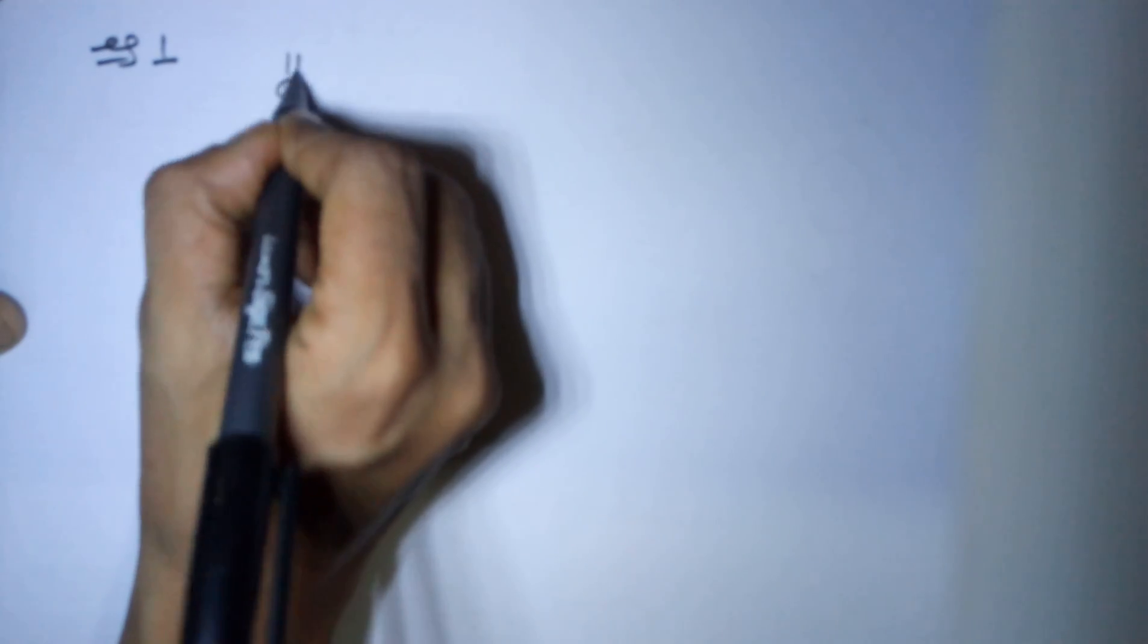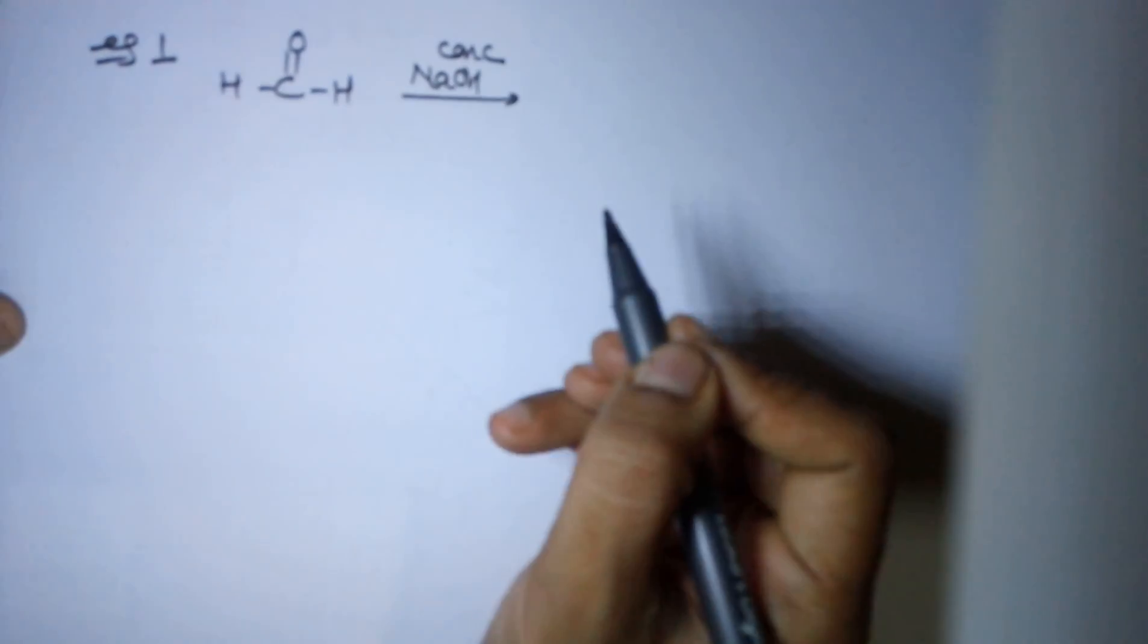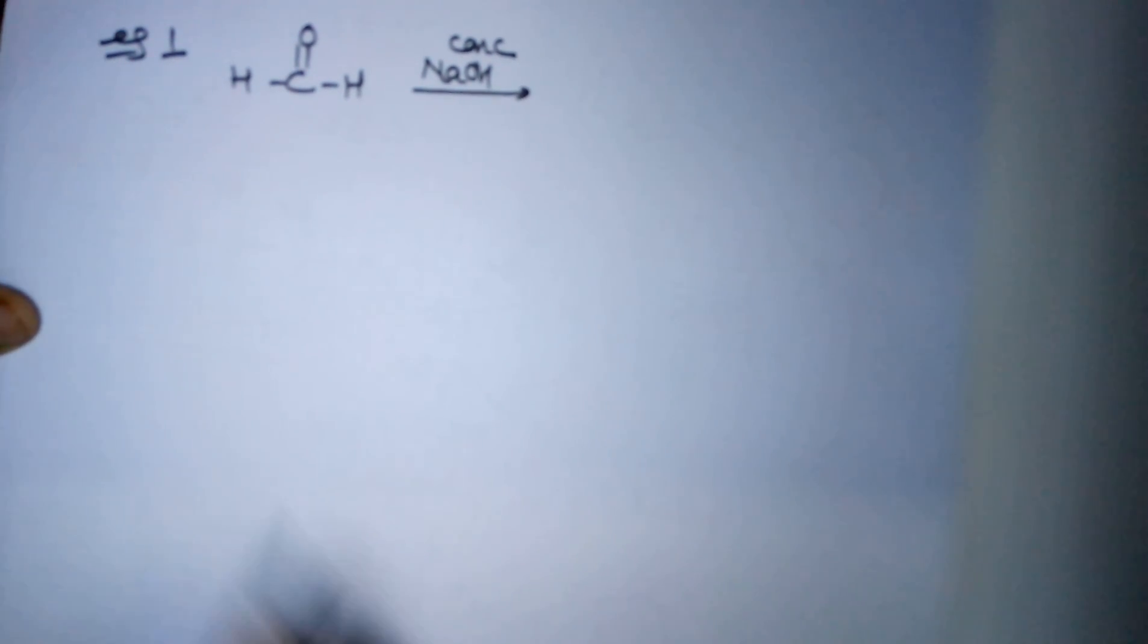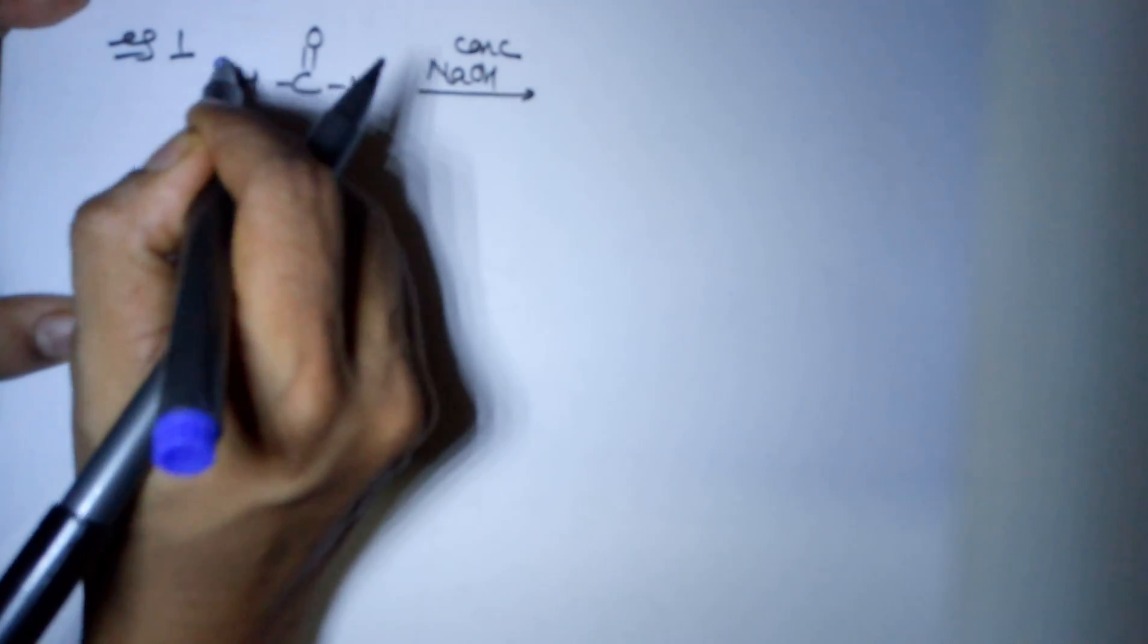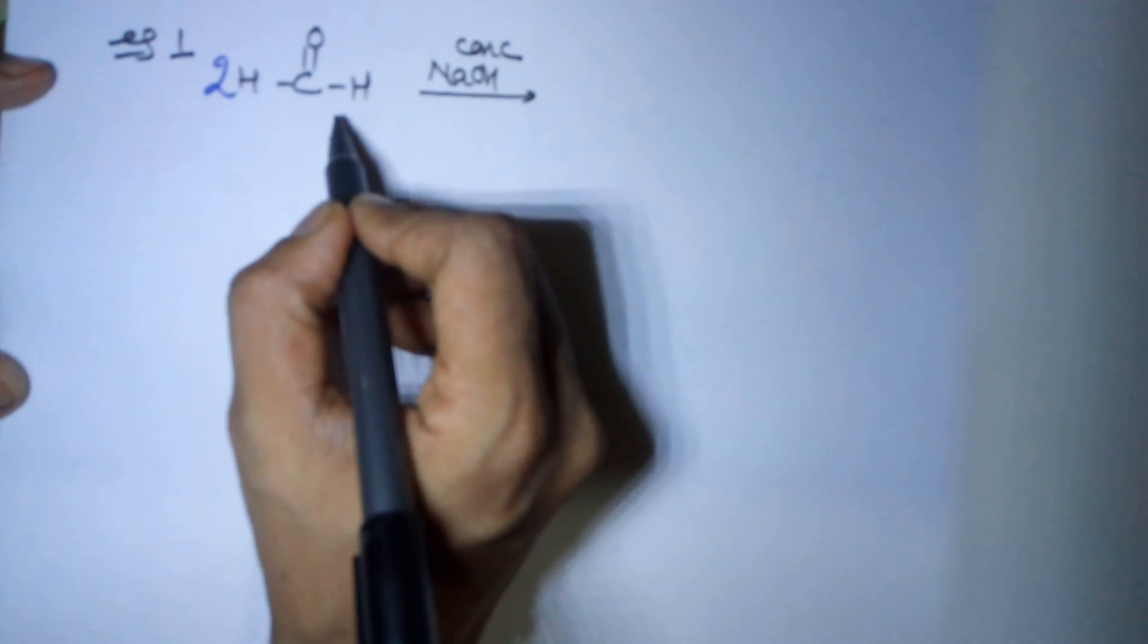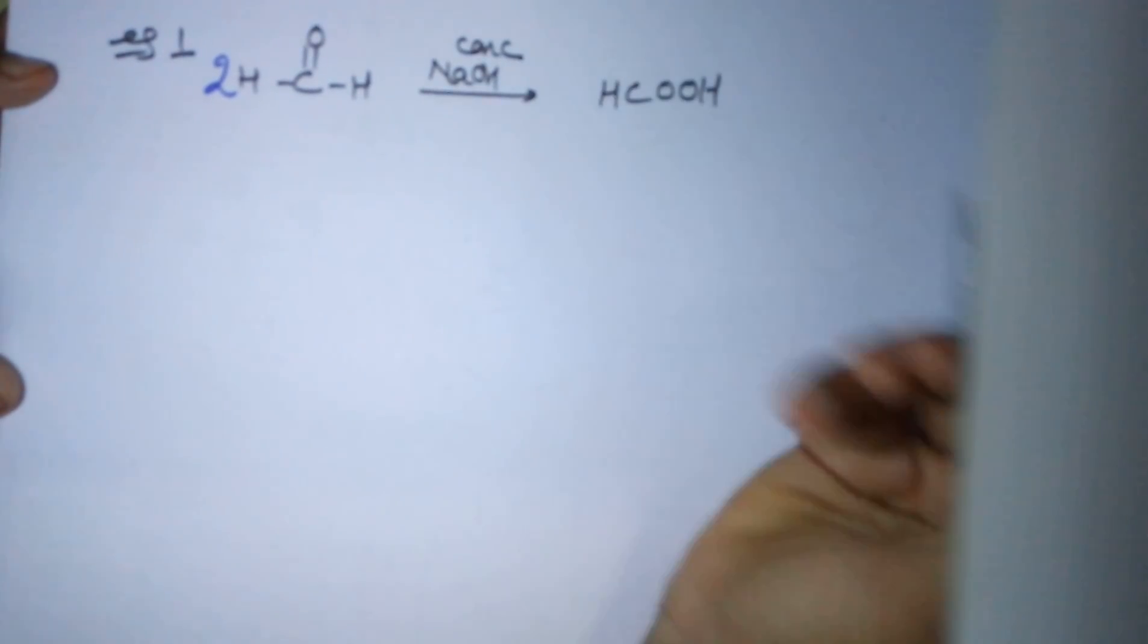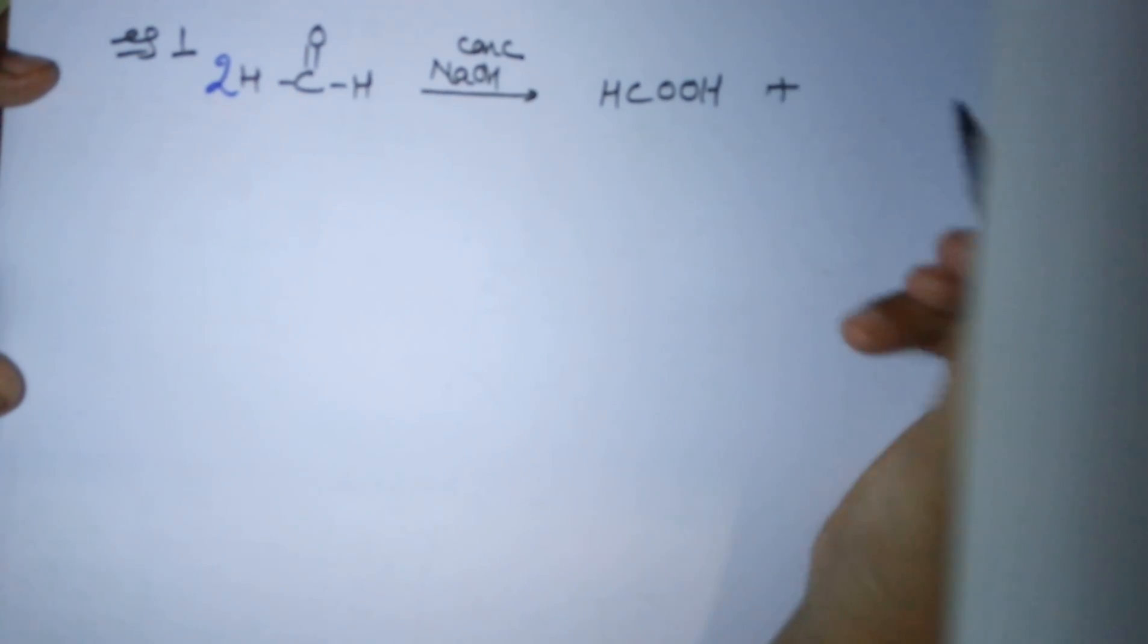Let us take the first simplest example. Example number one is that of formaldehyde. This is your formaldehyde and if it's written NaOH concentrated, which means you should understand that they are talking about the Cannizzaro's reaction. You will have to make a two before it yourself. After this you require it to undergo oxidation, and aldehyde on oxidation gives you a carboxylic acid, which means you require a carboxylic acid of one carbon that becomes formic acid.